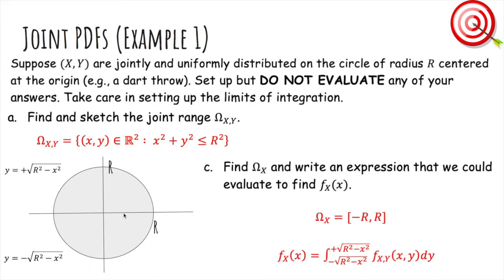For each particular x, like let's say we're at this x here, our y's will travel from -√(R² - x²) to +√(R² - x²). This is from multivariable calculus that you only integrate over this part.